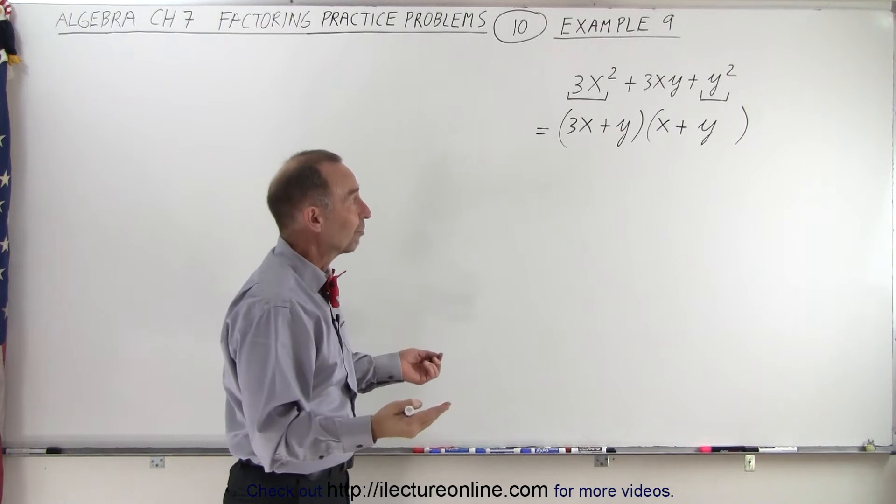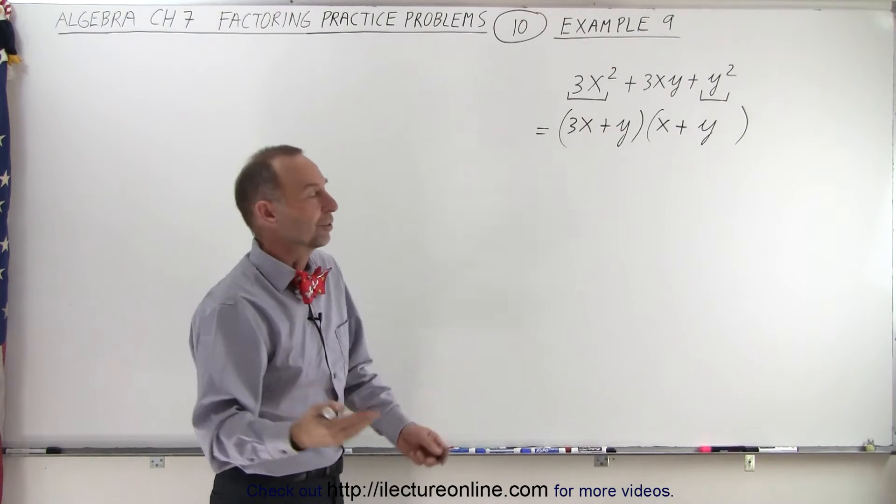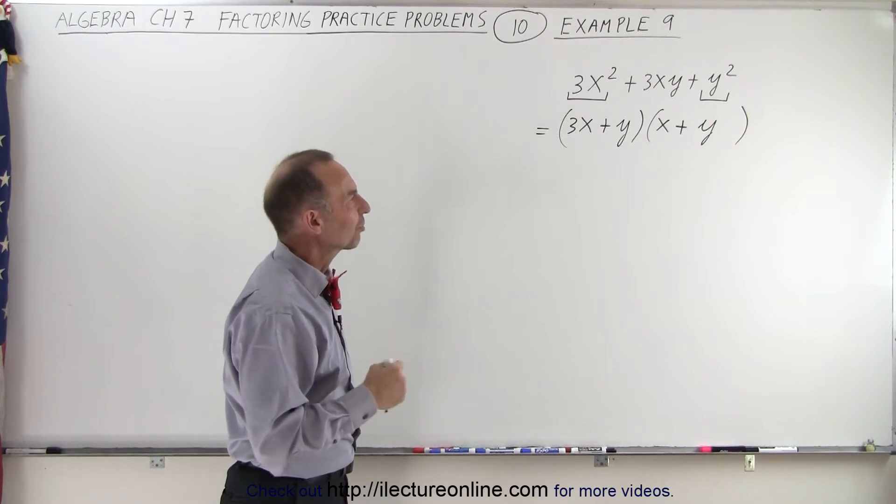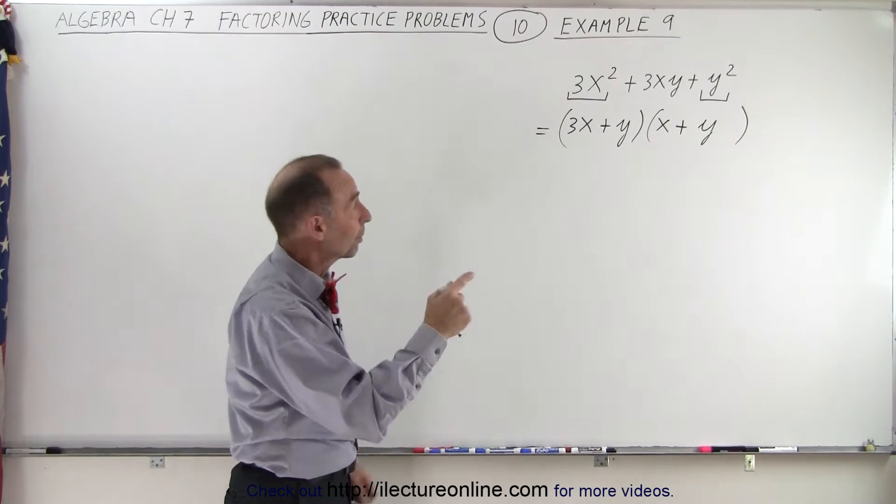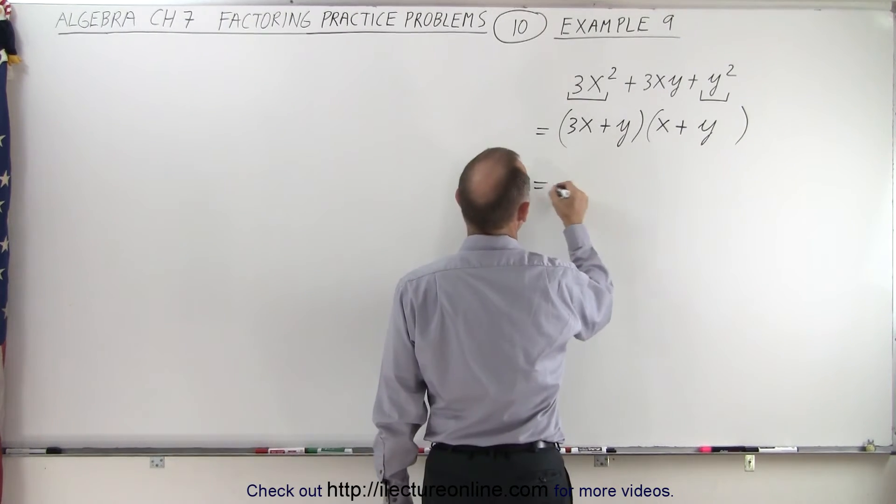So either that is the factored form, or there is no factor. Let's see if that's correct. The way to do that is to multiply everything out again. So let's try that.